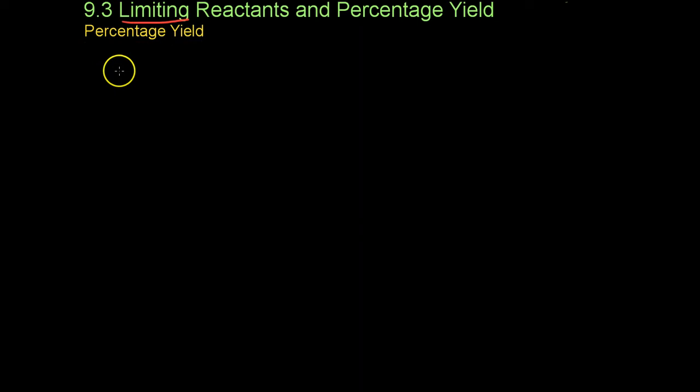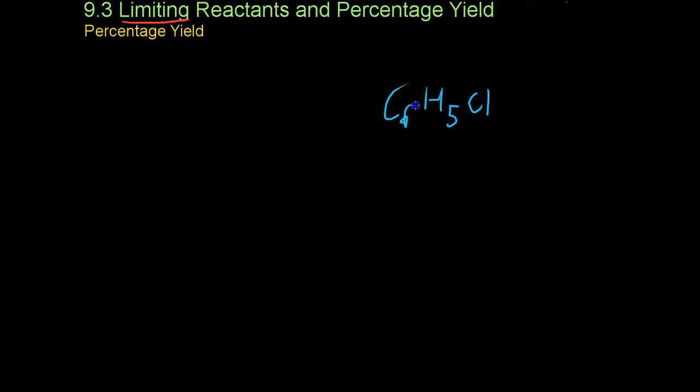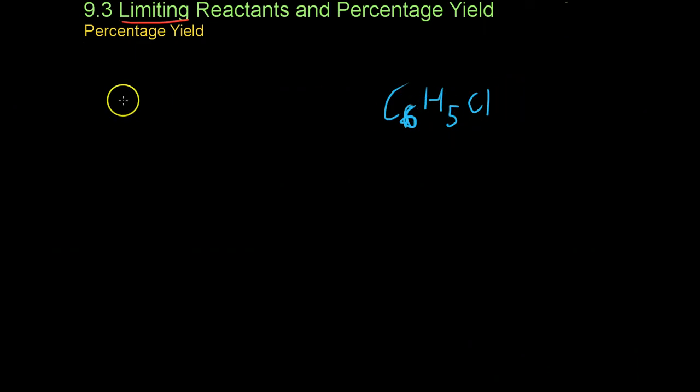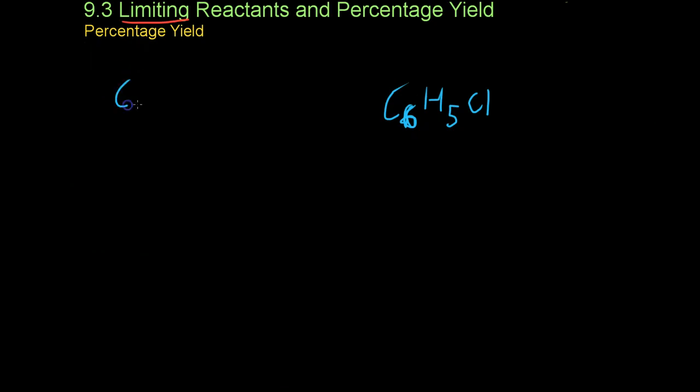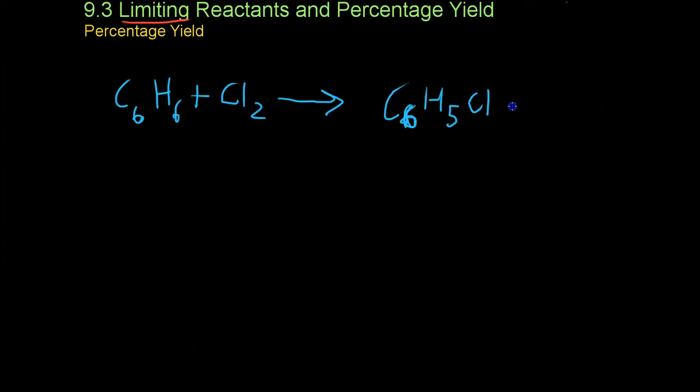Now I'll do a percentage yield example problem. Chlorobenzene, which is C6H5Cl, is used in industry to create a lot of consumer products. It is created by mixing benzene, which is C6H6, with chlorine gas in excess, so you don't have to worry about the chlorine limiting the reaction or affecting the percentage yield at all. As a byproduct, it also creates hydrochloric acid.